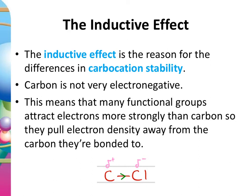This results in a polar bond, which we represent using delta-plus and delta-minus. For example, in a carbon–chlorine bond, chlorine is more electronegative than carbon, so it draws electron density towards itself. We get a delta-positive carbon and a delta-negative chlorine — and that is an example of the inductive effect.